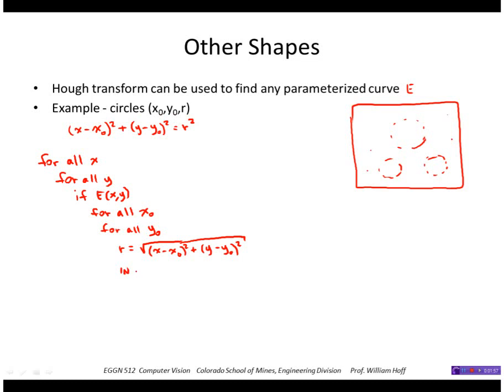So we now increment our Hough space at the cell corresponding to x0, y0 and r, and then we just have to terminate these for loops.